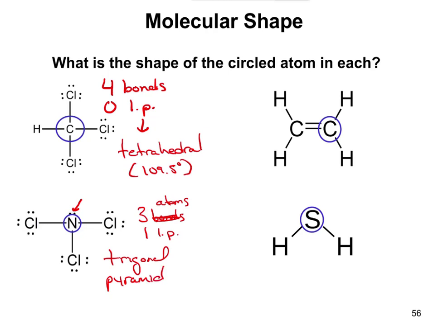Here, this is going to give us trigonal pyramid. If I were to ask you for the bond angle, you would say this one is going to be approximately 109.5 degrees again, maybe a little bit less than that, but that's close enough.